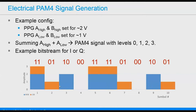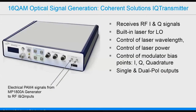Of course, no waveforms look that clean once you transmit at 28 gigabaud. But in this case we have a PAM-4 stream represented with values three, one, two, zero, and so on. We create a second independent PAM-4 stream, and together they transmit to the next step: the 16 QAM optical signal generation.